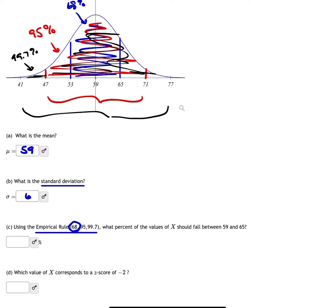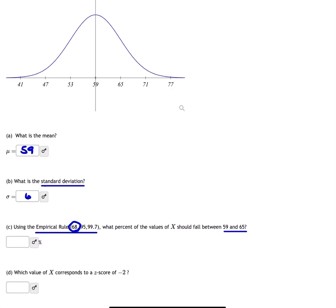That's what the empirical rule means. If it's asking what falls between 59 and 65, that's these two values. That's going to be half of the 68%. So 34% falls within the range of 59 and 65.